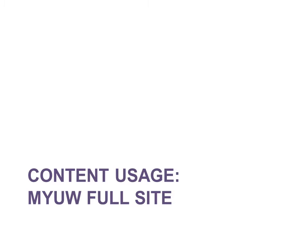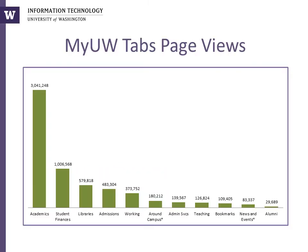We looked closely at which MyUW content students access and when. This slide shows the number of page views for each of the tabs for 2012-2013, excluding the My front page. The most commonly accessed tabs are Academics, Student Finances, Libraries, Admissions, and Working. These top five tabs are the same as those in the 2011-2012 academic year. Here we see again that student information needs constitute a majority of usage on MyUW.